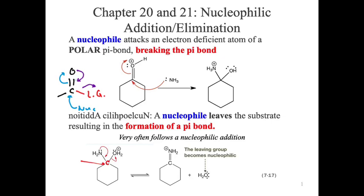There was a long conversation about this in OChem 1 when we talked about mechanistic steps — why write those words backwards? A nucleophile elimination is just a nucleophile addition backwards. That's ultimately what we'll be studying.